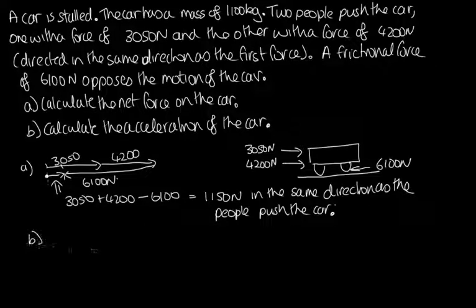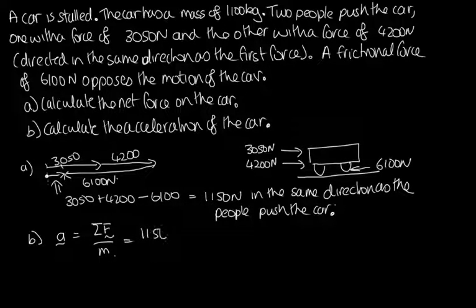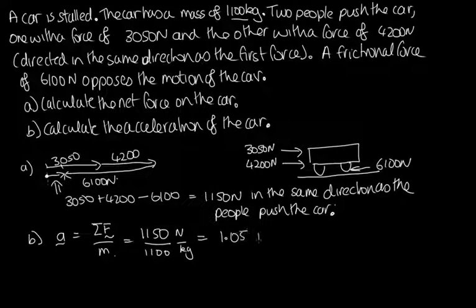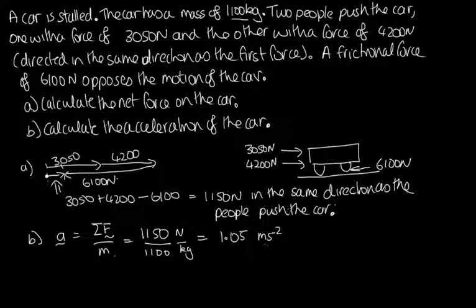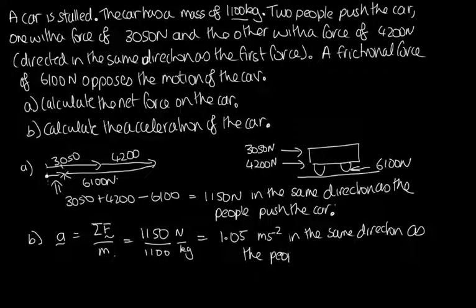Part B asks us to calculate the acceleration of the car. Using Newton's second law, the acceleration equals the net force divided by the mass. The net force is 1,150 Newtons and the mass is 1,100 kilograms, giving an acceleration of 1.05 meters per second squared. Since acceleration is a vector, we note its direction is the same as the direction the people are pushing the car.